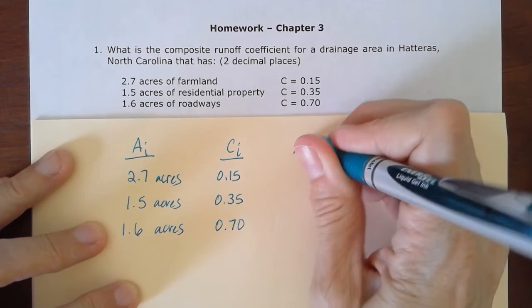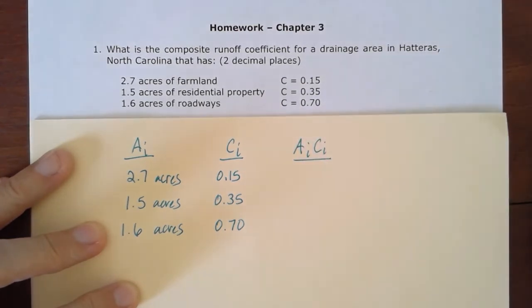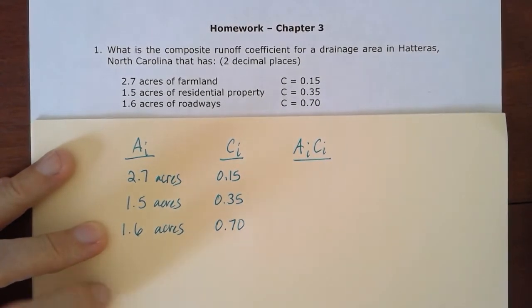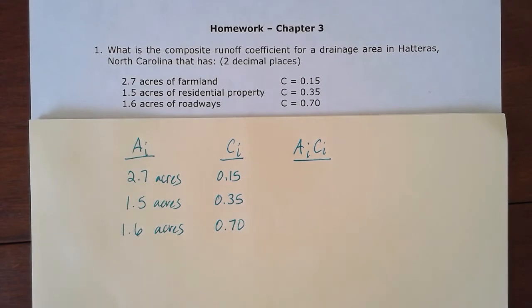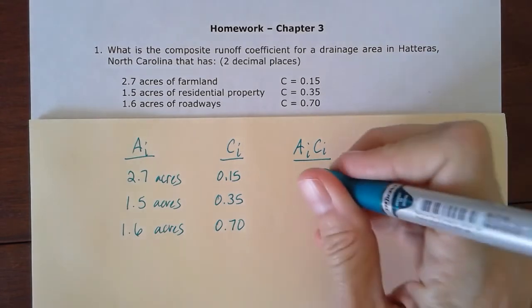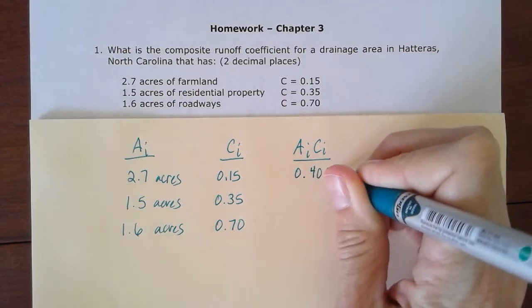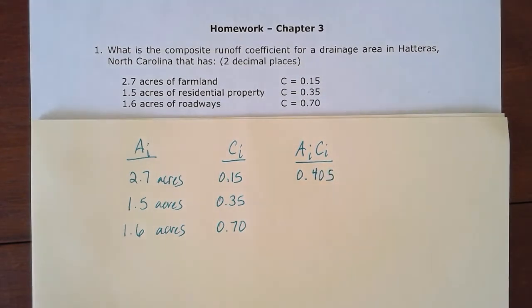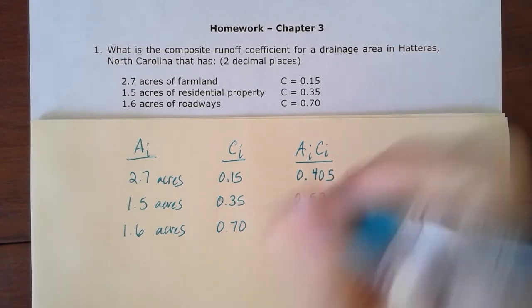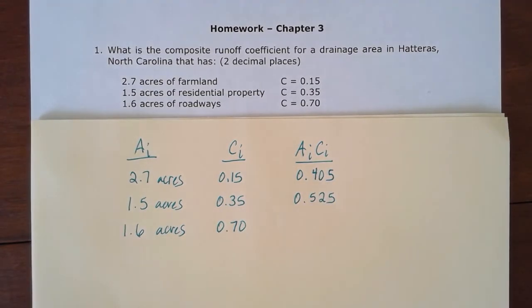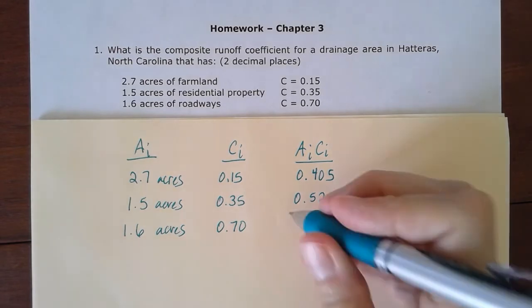I'll take those individual areas and multiply them by those individual coefficients. For the first one, 2.7 times 0.15 gives me 0.405. Then 1.5 times 0.35 gives me 0.525. And then 1.6 times 0.7 gives me 1.12.